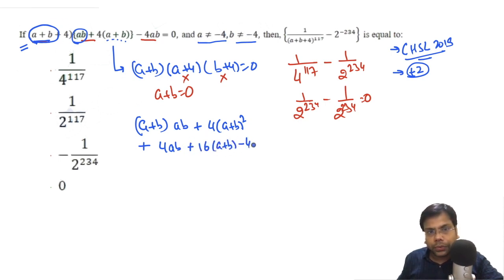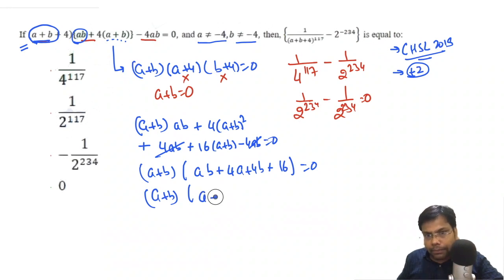So we have 4ab plus 4 into 16 a plus b minus 4ab equal to 0. This cancels out. We have a plus b, we're left with ab plus ab plus 4a plus 4b plus 16 equal to 0.